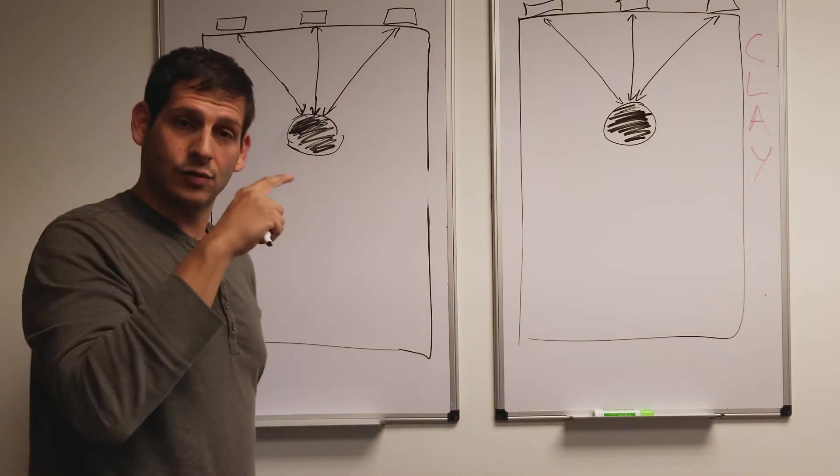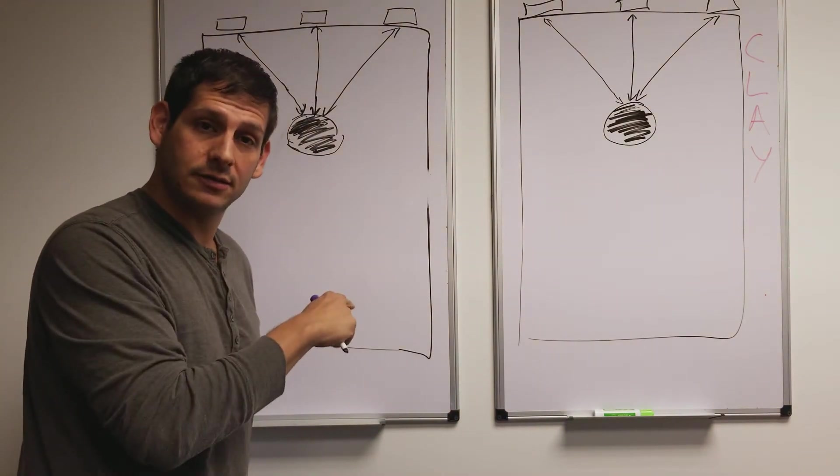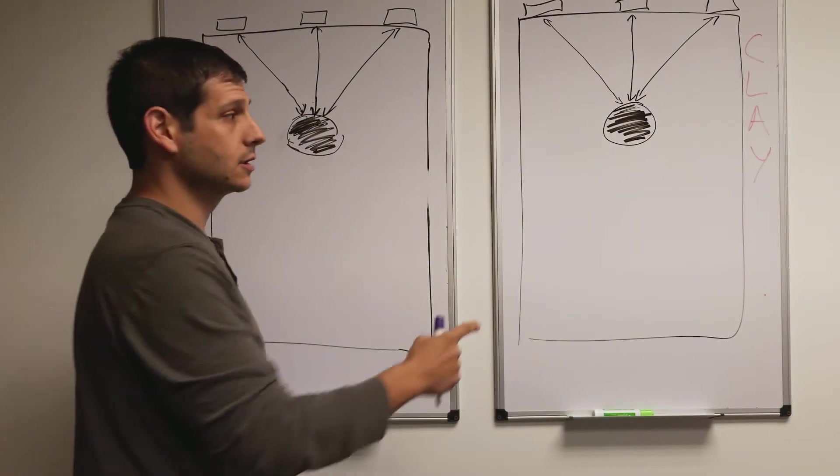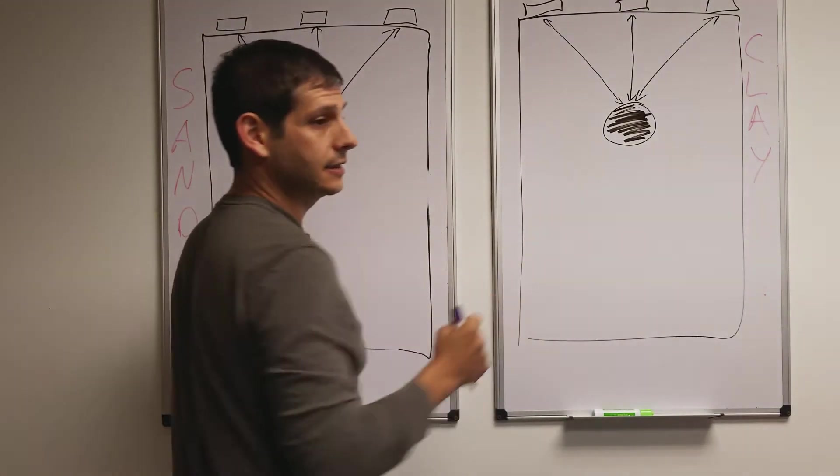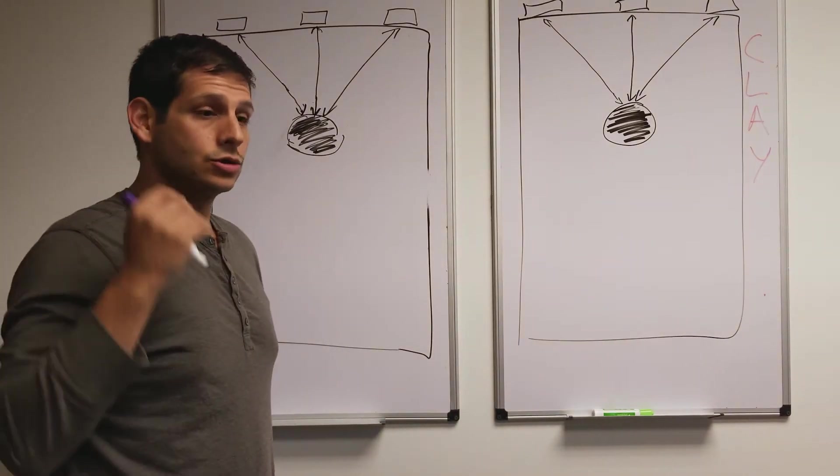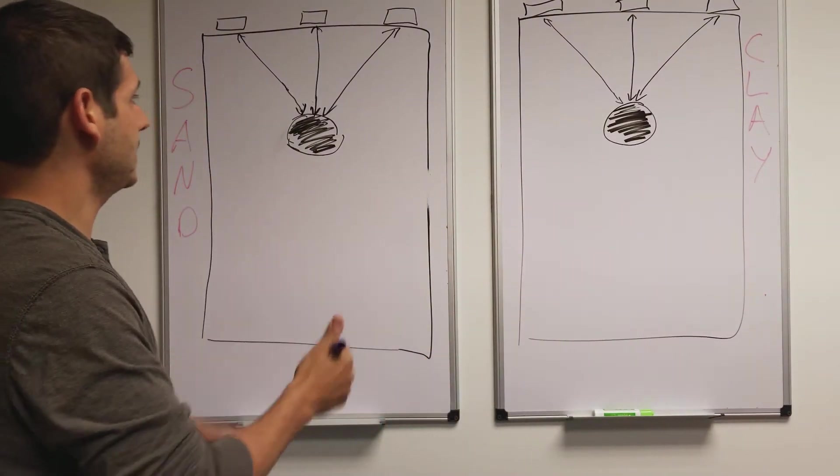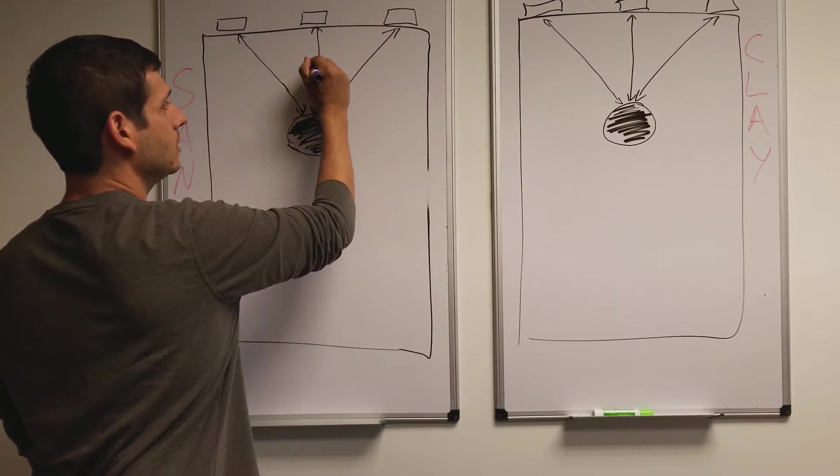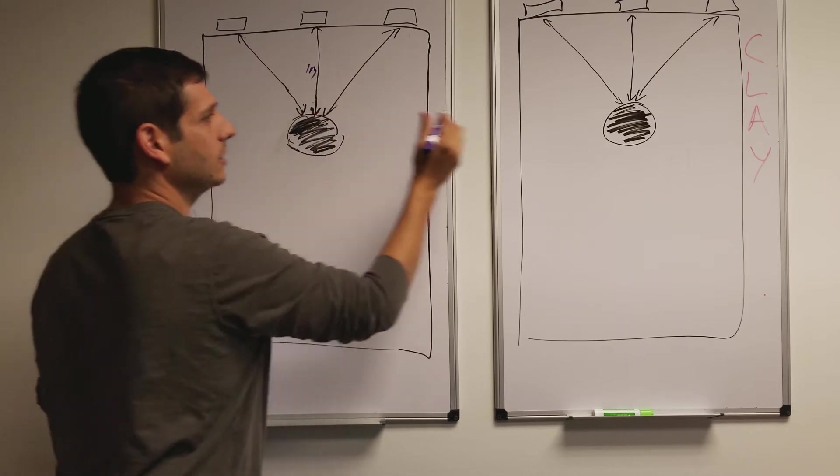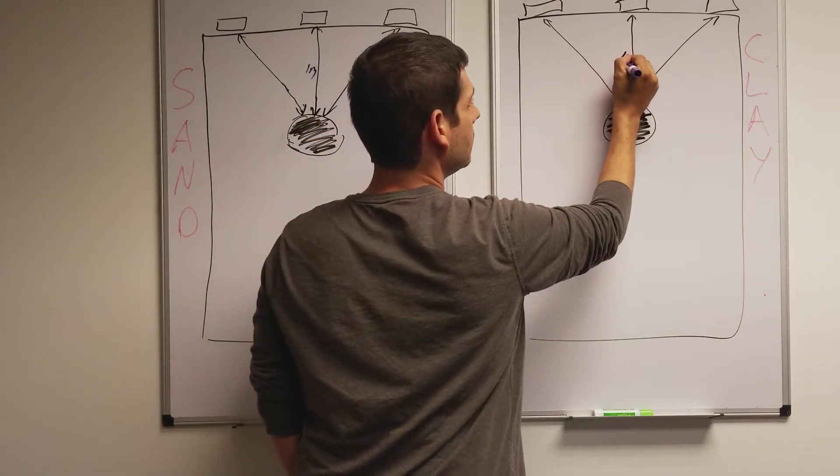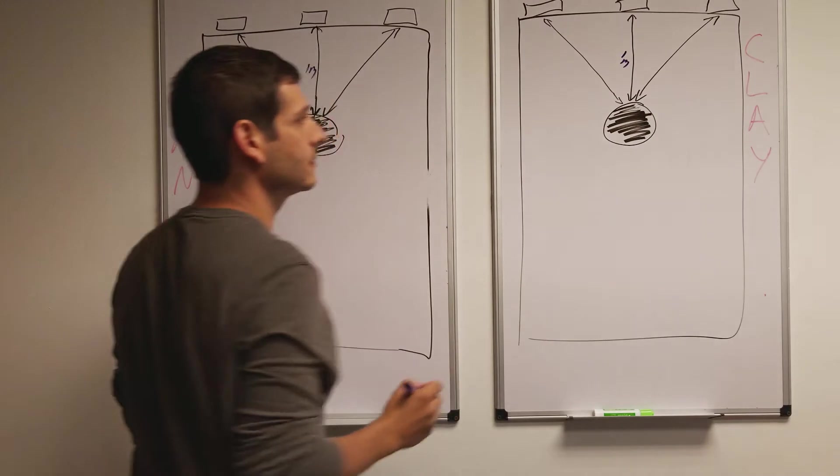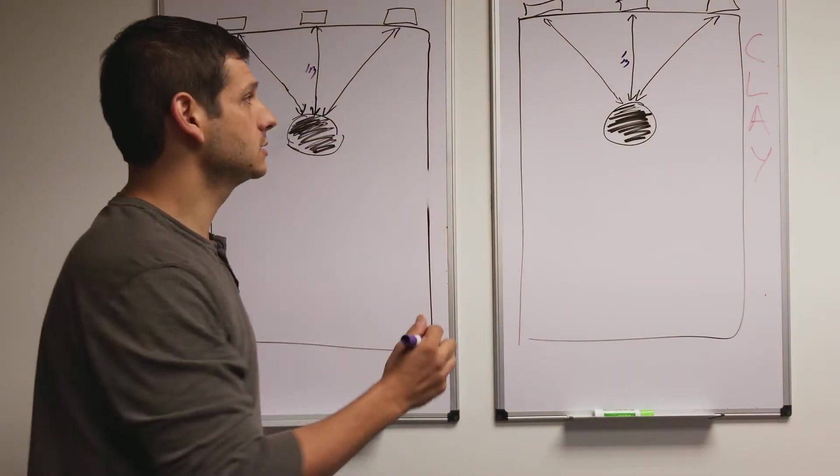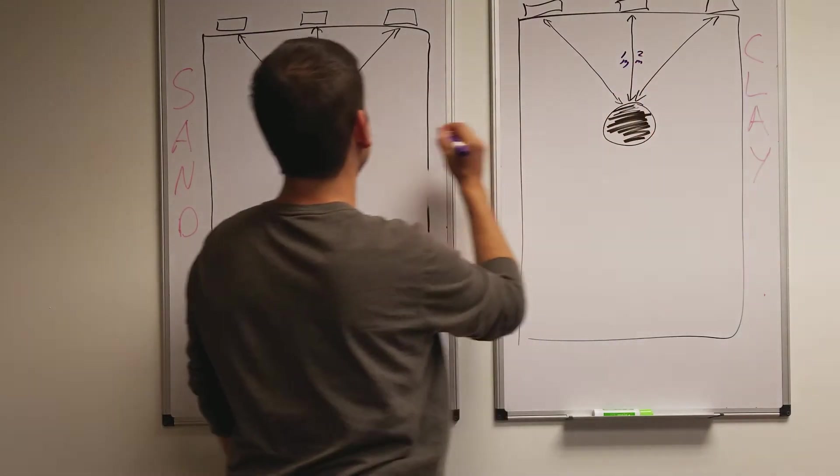Which one will the wave, the GPR wave, move faster in? It's going to move faster in the sand. Which is it going to move slower in? It's going to move slower in the clay. So, let's say that the depth of this target is one meter. One meter, one meter, when you're directly over it. Which means its two-way travel distance is going to be two meters.